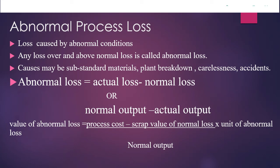The abnormal loss formula first deals with units. For the value of abnormal loss, the formula is: (total process cost − scrap value of normal loss) ÷ normal output, which gives the per unit value. This is then multiplied by the units of abnormal loss to get the total value of abnormal loss.